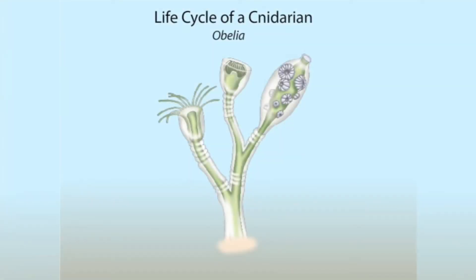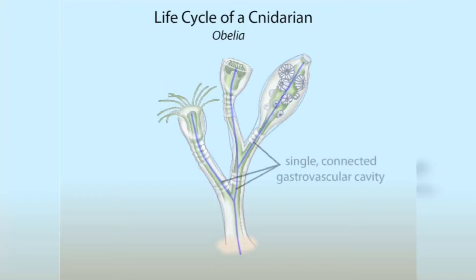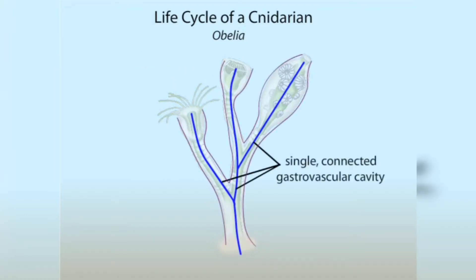Most Cnidarians, such as Obelia, have life cycles that alternate between polyp and Medusa generations. In Obelia, the most conspicuous stage is the polyp. This stage of the Obelia life cycle is actually a colony of many interconnected polyps that share a single gastrovascular cavity.